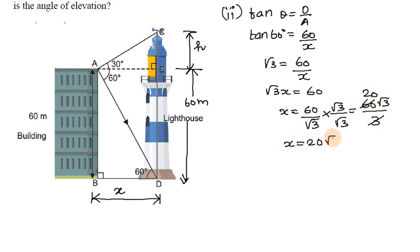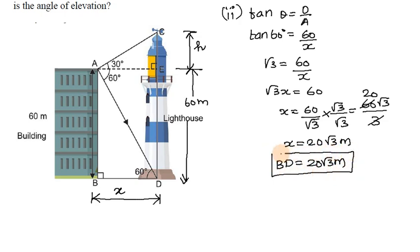Therefore x equals 20 root 3 meters. So bd equals 20 root 3 meters. Since bd equals ae, we have ae equals 20 root 3 meters.